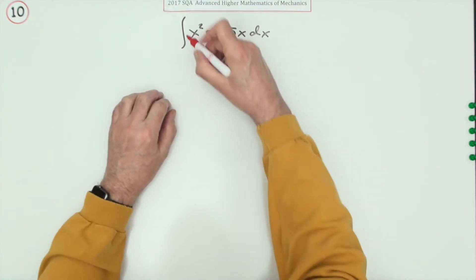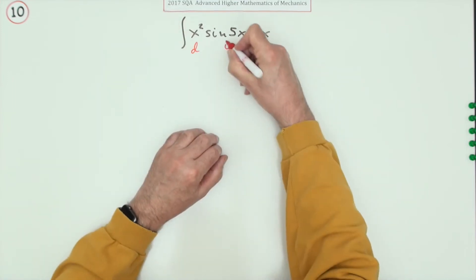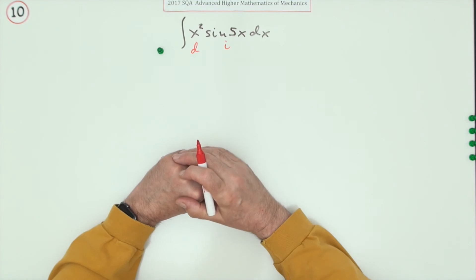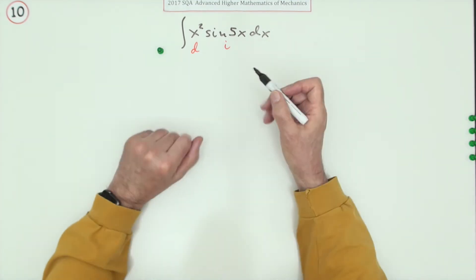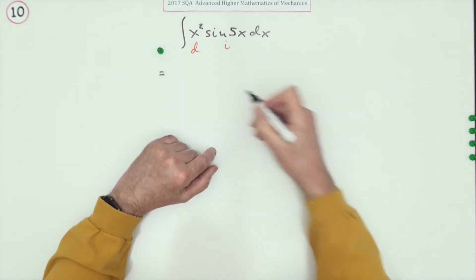However, differentiating x squared will eventually whittle it away, so that's the plan. I'll differentiate the x squared and integrate the 5x. Now doing that's the first mark, choosing which to differentiate and which to integrate.